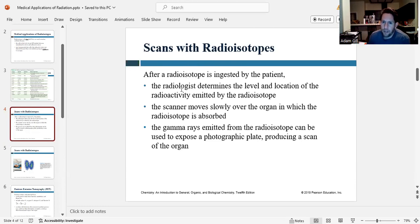But once the patient has ingested it, the radiologist will determine the level and the location of the radioactivity emitted by the radioisotope. So usually some tissue within your body will absorb that radioisotope, depending on which one it is. And then once it's in that tissue, it's giving off radiation, and we can pick up that radiation using some sort of scanning device. The scanner will move slowly over the organ or tissue in which the isotope is absorbed. And the gamma rays emitted from the isotope can be used to expose a photographic plate, producing a scan of the organ.